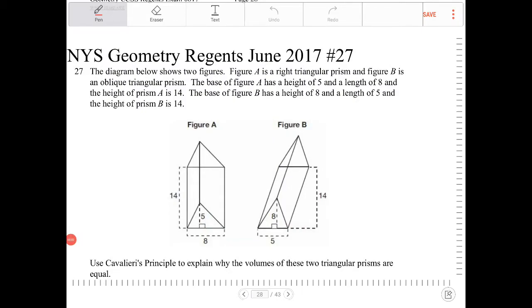The diagram below shows two figures. Figure A is a right triangular prism, and figure B is an oblique triangular prism. The base of figure A has a height of 5 and a length of 8, and the height of prism A is 14. The base of figure B has a height of 8 and a length of 5, and the height of prism B is 14.